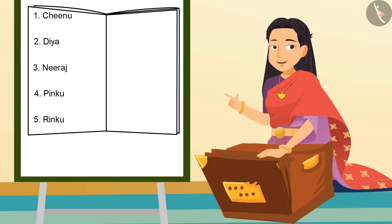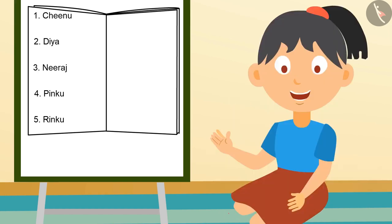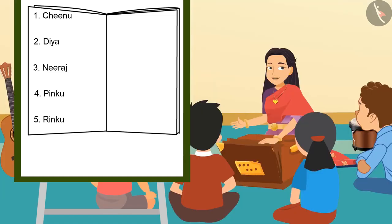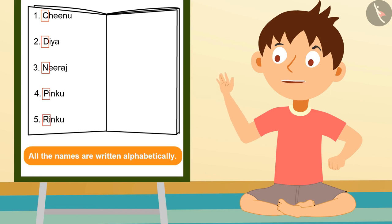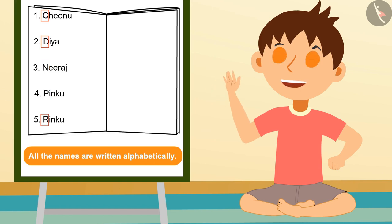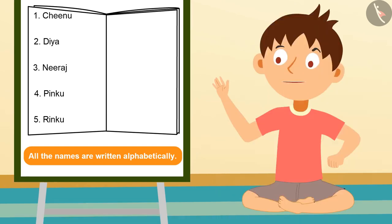Can any one of you tell me why I have put Neeraj's name before Pinku's? No, this is not good reasoning — you all sing so well. Think carefully. You have written all the names in alphabetical order. As Pinku's name starts with P and Neeraj's name starts with N, and in alphabets N comes before P, so Neeraj's name is written before Pinku.